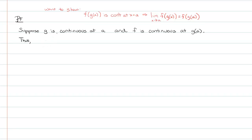Since g is continuous at a, we can now say that the limit as x approaches a of g of x must therefore equal g evaluated at a.